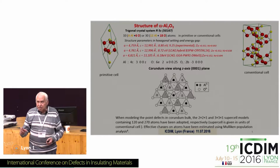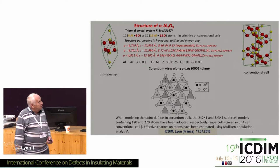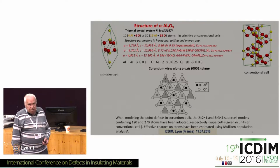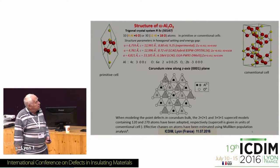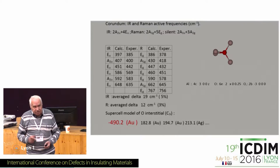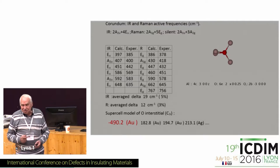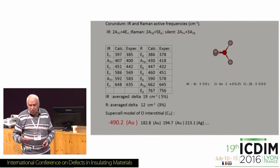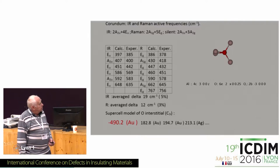The next important point is where to place the interstitial. Initially, the interstitial was placed in the Wyckoff position with symmetry C3i — Wyckoff position B. A very important feature of our calculations is computing phonon frequencies to determine whether the configuration is truly stable. To verify that our frequency calculations are reliable, we first calculated frequencies for the bulk crystal, which are known experimentally. The calculated frequencies and experimental ones are more or less close — the difference is no more than three to five percent.